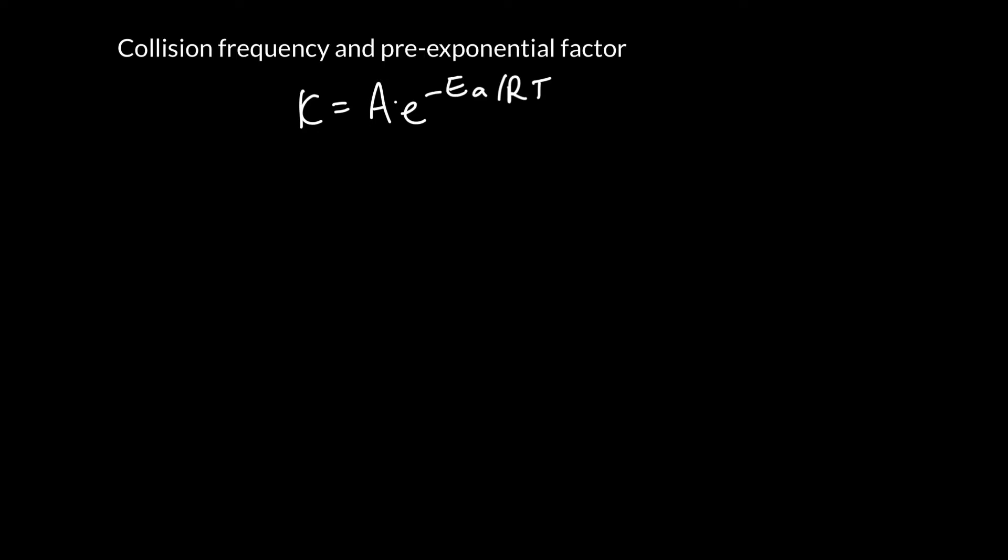The question is, what does it really represent? It turns out that this factor is often considered to be the product of two things. Z is the collision frequency, the number of times the molecules collide per second. And P is the probability that the molecules collide with the correct orientation.